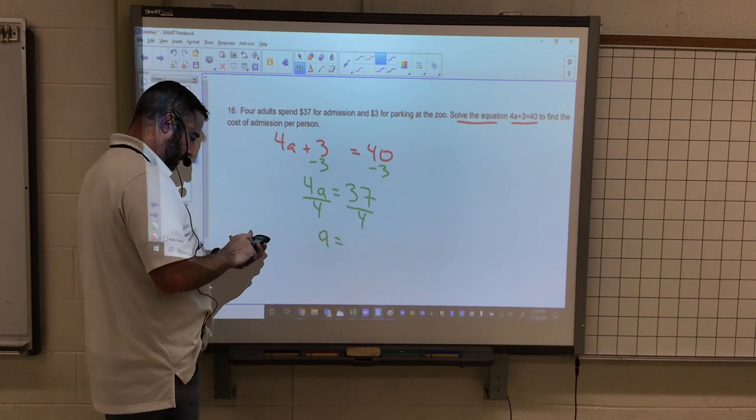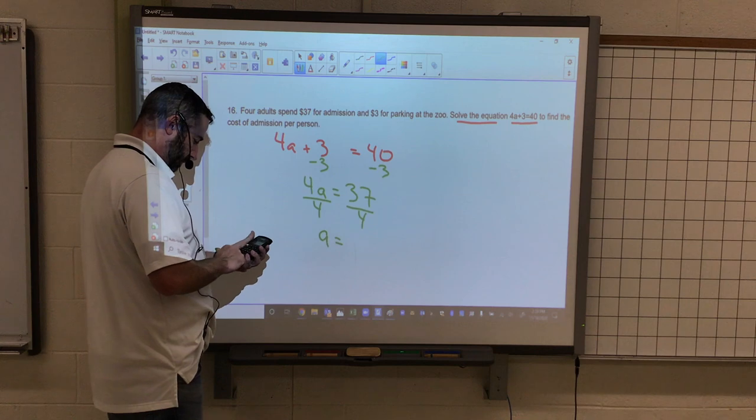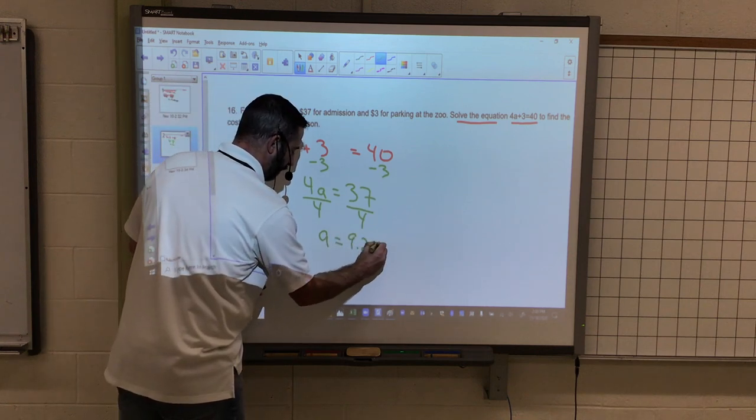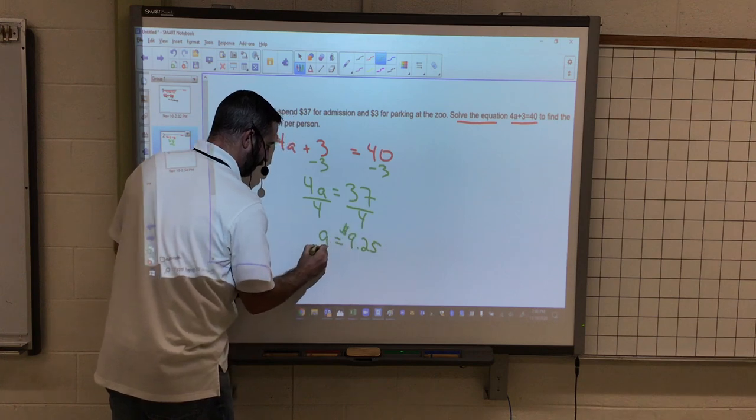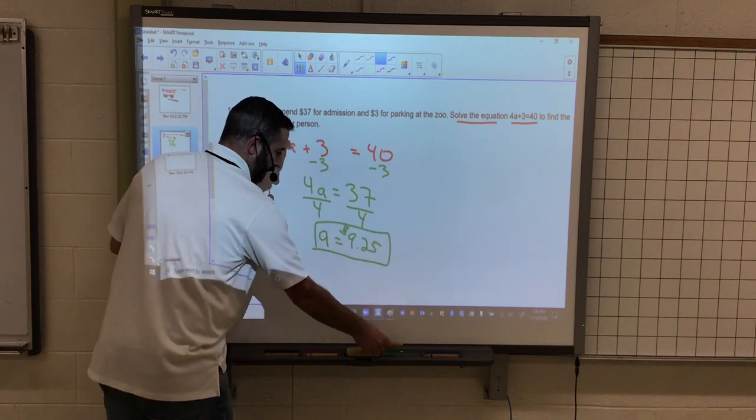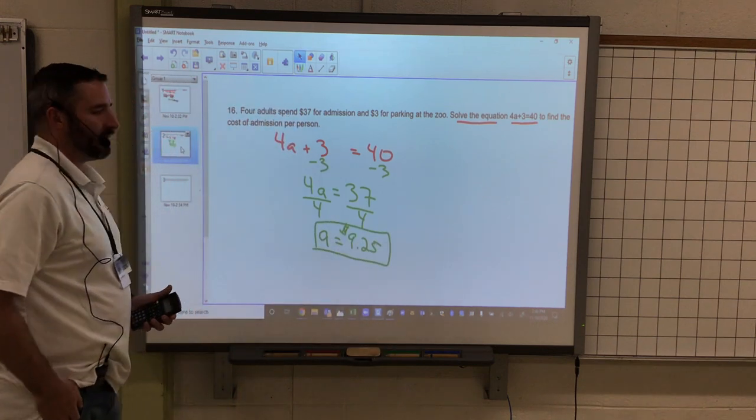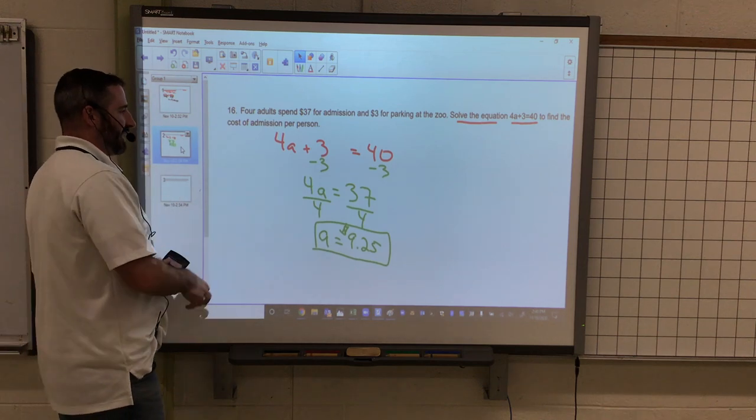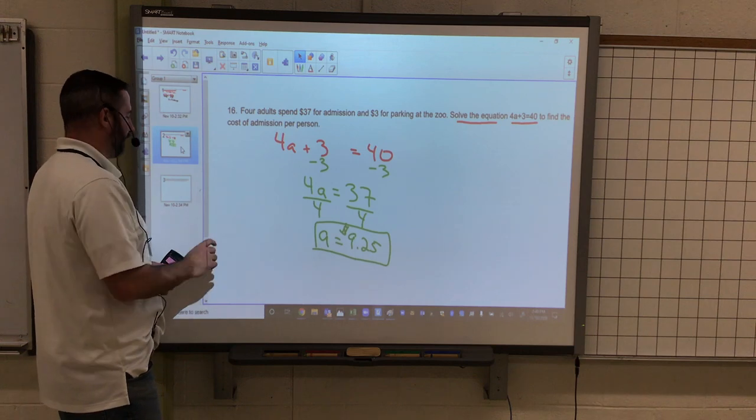And A equals 9 and 1/4. A is going to equal $9.25. So they were nice in this particular problem, where they gave us the equation to solve, and we just have to do our two-step equation and solve from there.